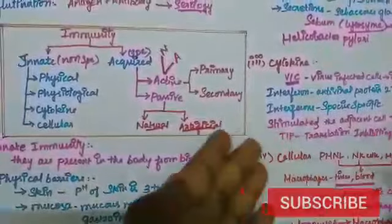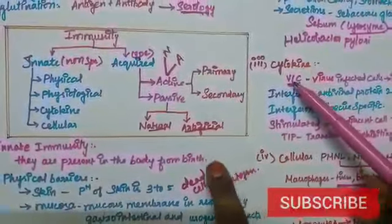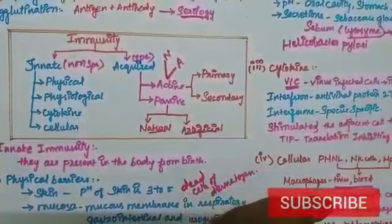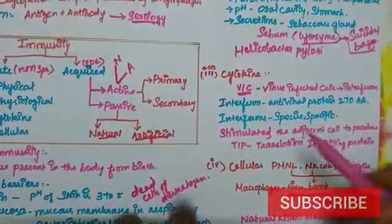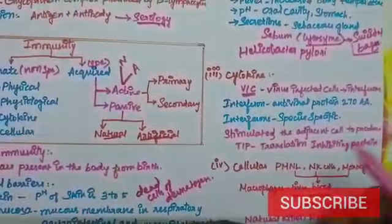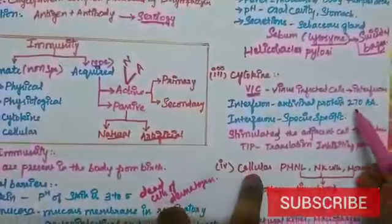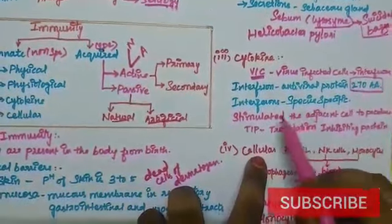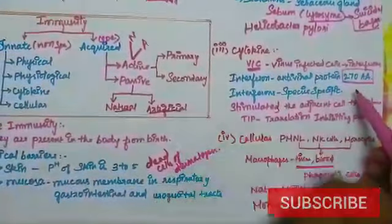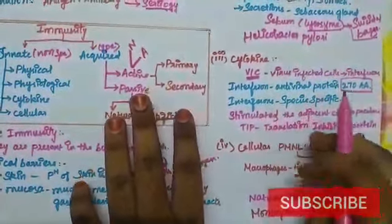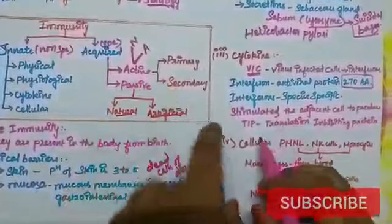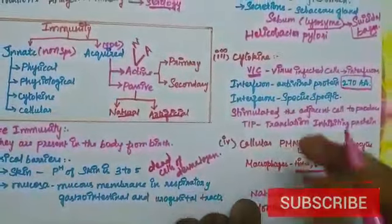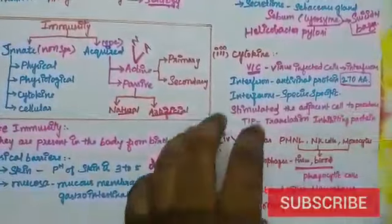Now let's look at cytokine. Cytokine is actually a protein complex produced by virus infected cells. Virus infected cells produce interferons. This interferon is especially named as cytokines. Interferons. What is interferon? It's an antiviral protein made up of 270 amino acids. Interferons are species specific - it can produce immunity against only that type of virus. Interferons play an important role in our innate immunity. It induces the adjacent cells to produce TIP - translation inhibiting protein - so that the virus won't affect or infect the nearby cells.